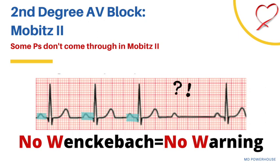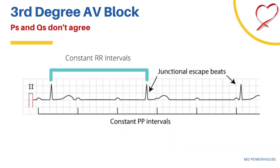Finally, let's look at third degree AV block. In third degree AV block, there is complete dissociation between the atria and the ventricles — the P's and Q's don't agree in the third degree. On ECG, you will find constant RR intervals, shown by the blue brackets, as well as constant PP intervals. Another key finding is junctional escape beats, identified by the black arrows.